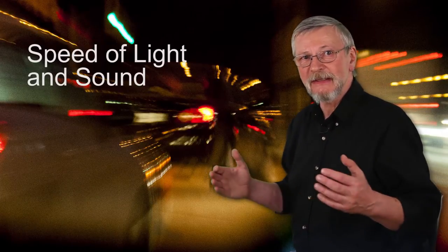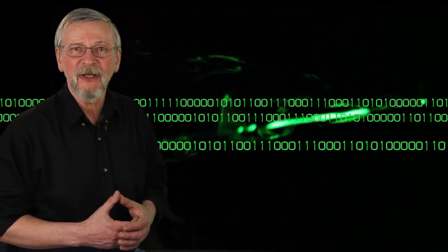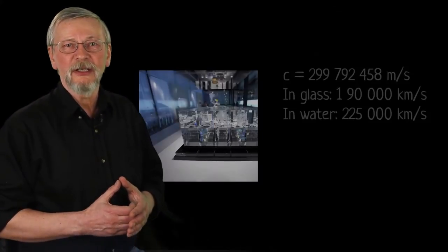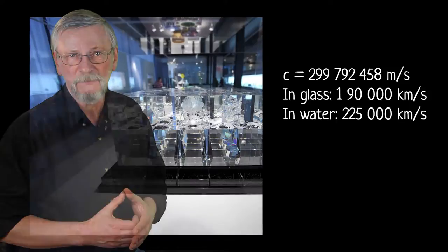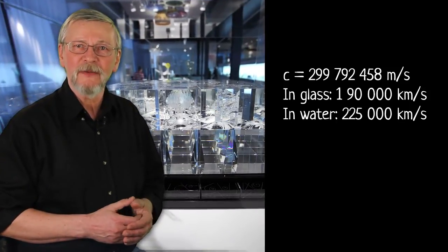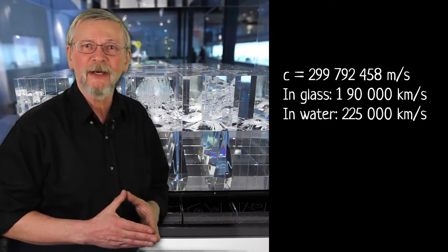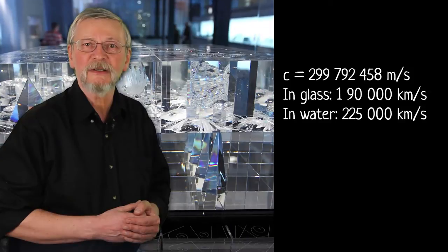Now, let us talk about the speed of light and sound. According to the theory of relativity, the speed of light in a vacuum is the fastest speed at which energy and information can travel. It is denoted as c and is approximately equal to 300,000 kilometers per second. In a transparent medium, the speed of light is lower — for example, light travels at 190,000 kilometers per second inside glass and about 225,000 kilometers per second in water. Travel at the speed of light would require infinite energy; therefore, matter does not travel at that speed.